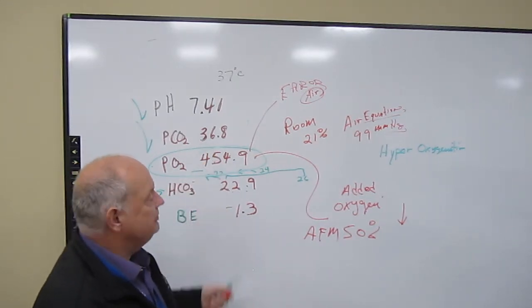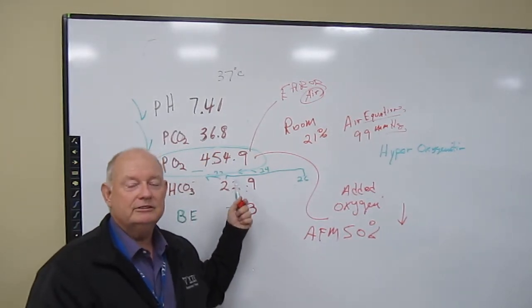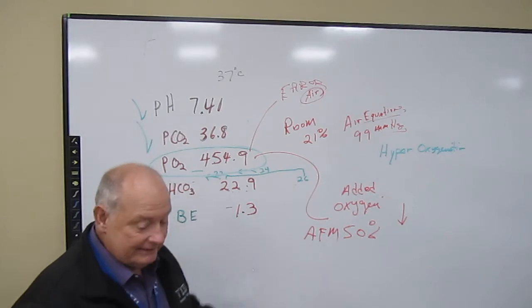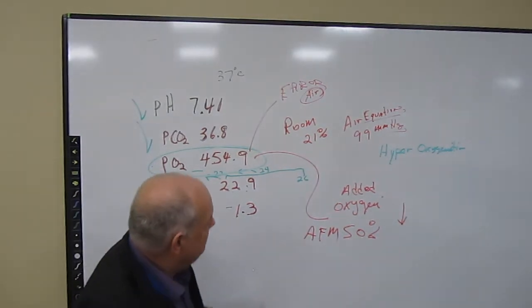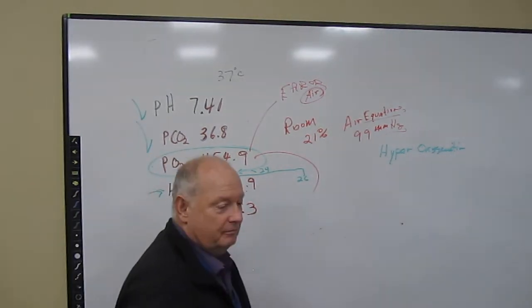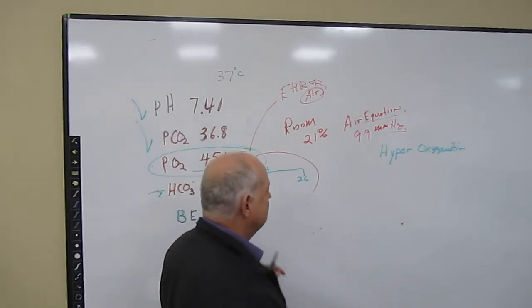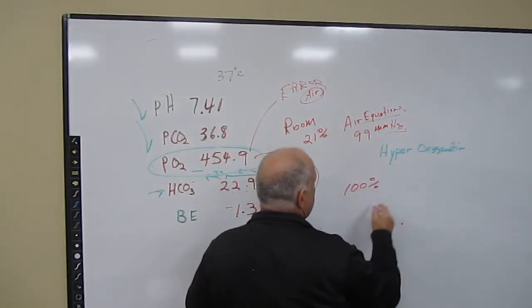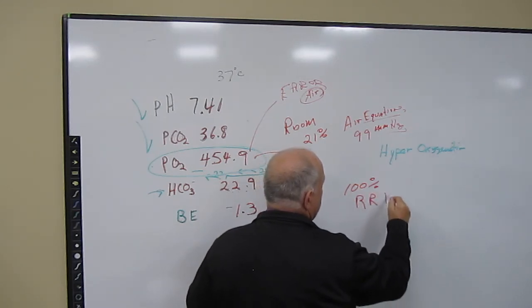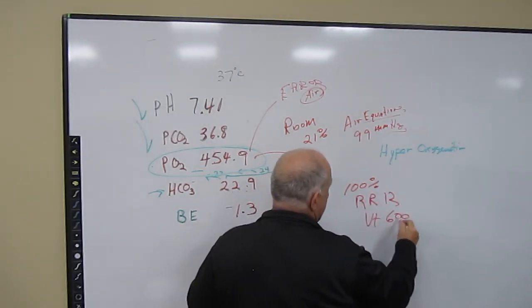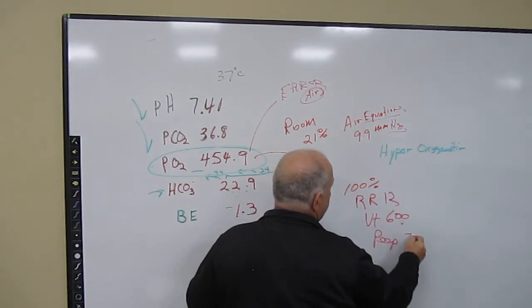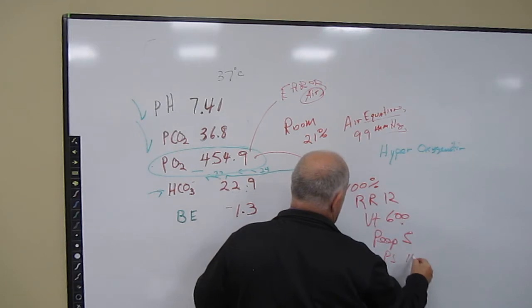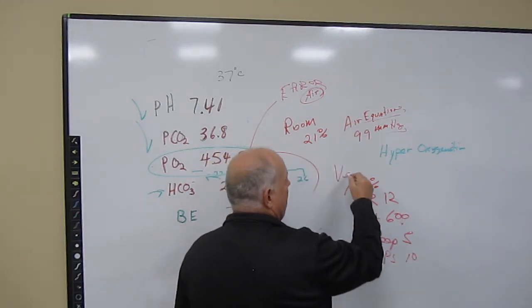So in this result, you would look at this blood gas and you'd say, well, all I want to do is change the FiO2. Let's just look at this again and say, Mr. Dunkleosiosus is on 100%, a respiratory rate of 12, a tidal volume of 600, a PEEP of 5, and a pressure support of 10. So he's on a ventilator.